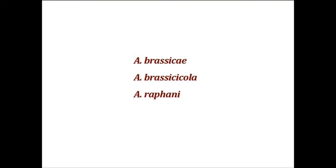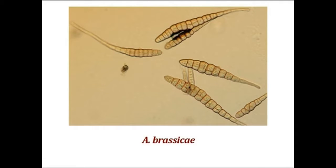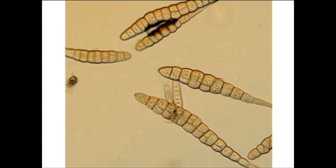Three species of Alternaria are responsible for this disease. Alternaria brassicae: conidia are of bigger size with a larger beak, obclavate, rostrate with 16–19 transverse septa and 0–8 longitudinal or oblique septa, pale or greyish olive; the beak is about one-third to half the length of the conidium. Mycelium is immersed; hyphae are branched, septate, hyaline. Conidiophores are simple, erect, bearing one to several small but distinct conidial scars. Conidia are solitary or occasionally in chains of up to four.